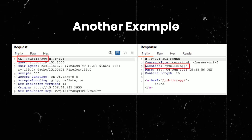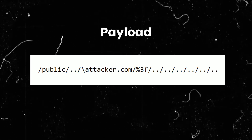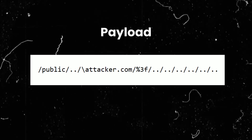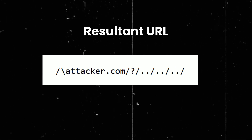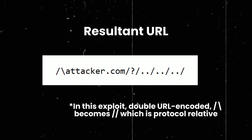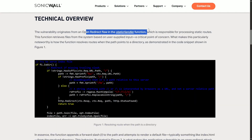This is normal behavior for static file servers, but if an attacker crafts a path like /public/../attacker.com/ with the rest of the payload, after sending this request the redirect becomes //attacker.com/?/order/ and the rest of the payload. The attacker.com gets interpreted by the browser as protocol-relative because of the two forward slashes, so the user is redirected to attacker.com.